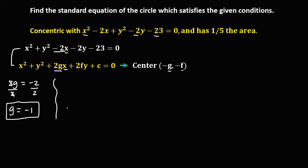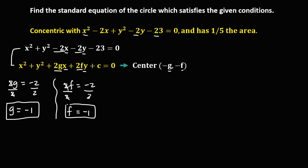To solve for f, comparing the y terms, we have 2f equal to negative 2. Dividing both sides by 2, f is equal to negative 1.